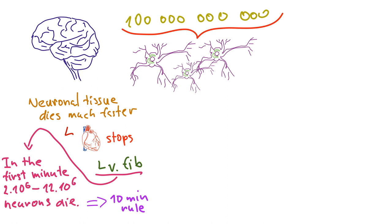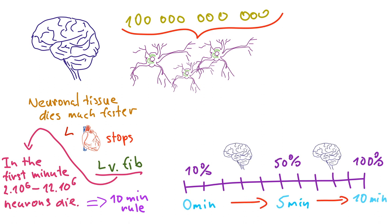Maybe a bit better rule is to imagine that for every minute of no perfusion, 10% of the brains will die. Thus, in the first minute, 10% of brains die. In the second minute, 20%. In the fifth minute, 50%. And this continues to 10 minutes where all brains should be dead.